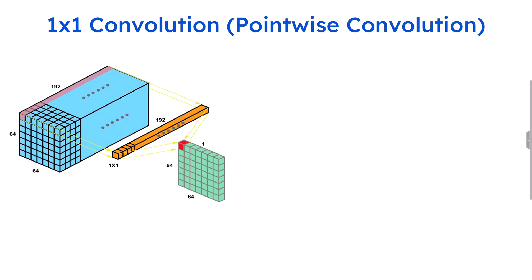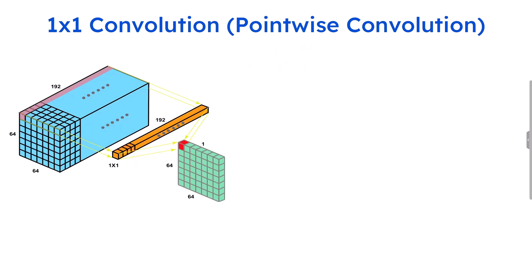It is a little different from the traditional convolution like 3x3 or 5x5 convolution filters. In 1x1 convolution, this filter gets applied over 1x1 pixels only. So with this, it may not seem complicated, or you may feel it is not capturing much information because it is getting applied on a single cell, single pixel only.